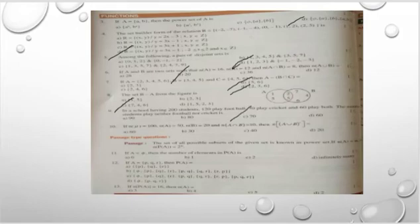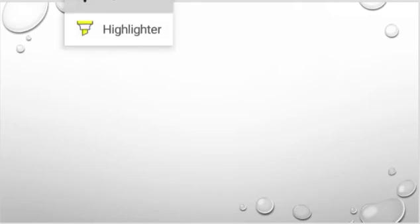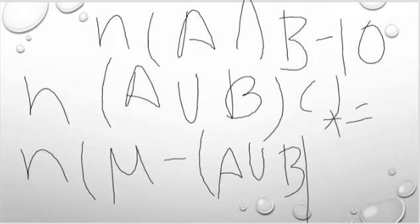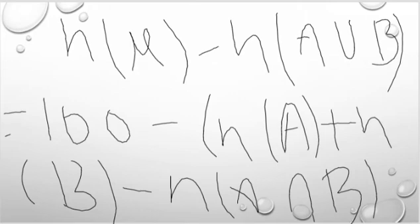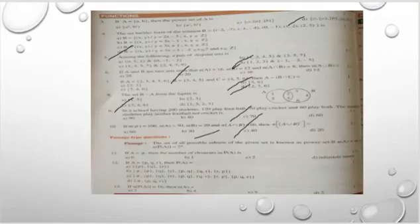Next question: if n(U) = 100, n(A) = 50, n(B) = 10, then n(A∪B)' equals? We solve the 10th question — the answer is 40.